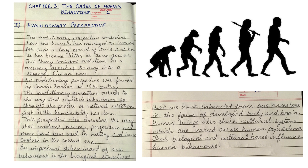The evolutionary perspective was founded by Charles Darwin in the 19th century. It relates to the way that cognitive behaviors go through the process of natural selection, just as the human body has done. This perspective also considers the way that emotions, memory, and more have been used in history and have evolved in the current era.